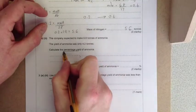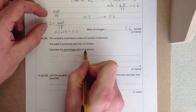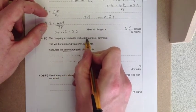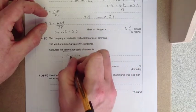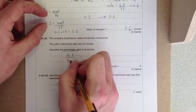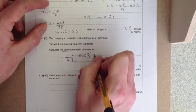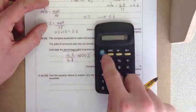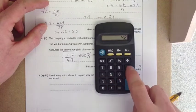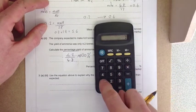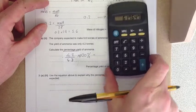The next part asks you to calculate the percentage yield of ammonia. The company only made 4.2 when they expected to make 6.8. So you put 4.2 divided by 6.8 multiplied by 100 percent, which equals 61.7%.